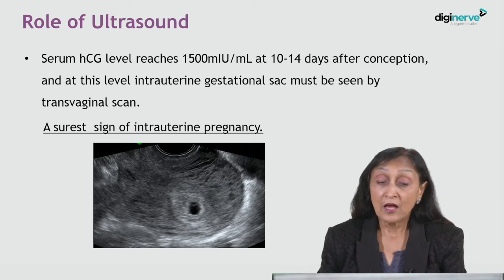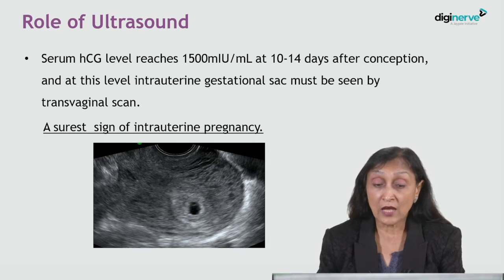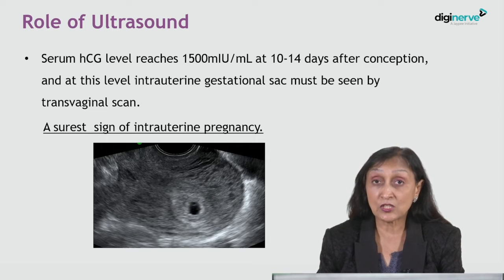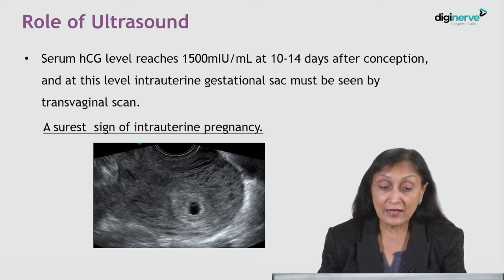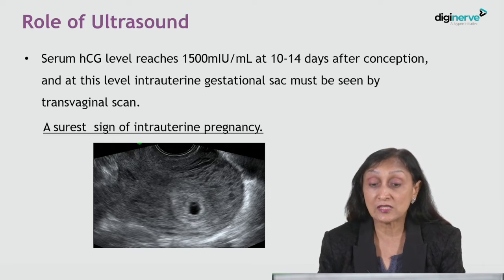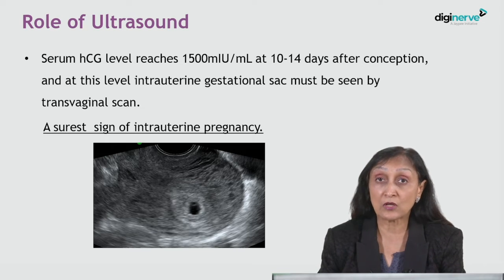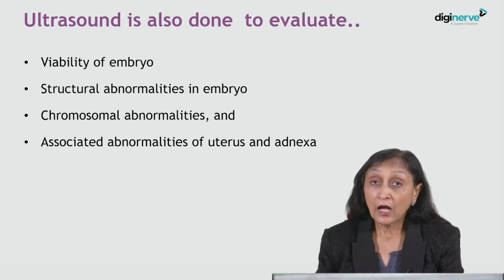Serum beta-HCG level reaches 1500 milli-international units per ml at 10 to 14 days after conception, and at this level an intrauterine gestational sac must be seen by transvaginal ultrasound. This is the surest sign of intrauterine pregnancy.